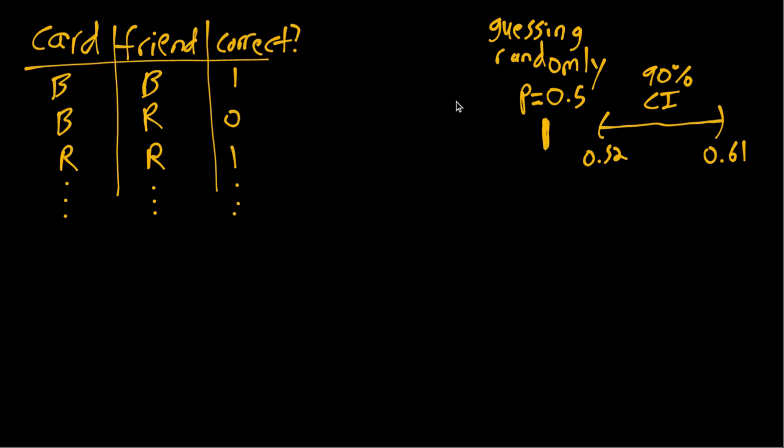So all of the values in your interval are actually higher than 0.5. So your friend looks at this and says, I've proved that I have magical powers, because if I were guessing randomly, my p would be 0.5, my correct guess probability, but as you can see, all of the values in the confidence interval are bigger than 0.5. So I'm able to guess correct more than half the time.